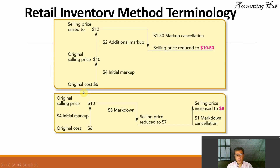For example: original cost is 6, initial markup is 4, so original selling price is 10. Additional markup of 2 brings it to 12; markup cancellation of 1.5 brings the selling price to 10.50, same as 10. Then a markdown of 3 reduces it to 7, and a markdown cancellation of 1 brings it back to 8.